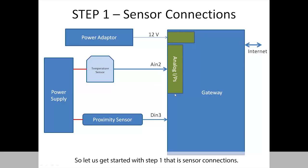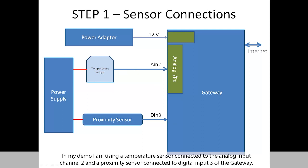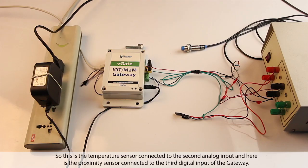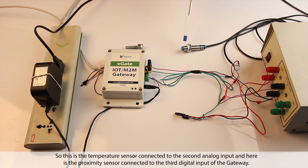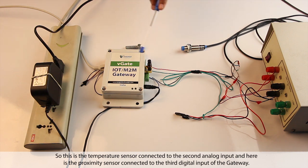Let us get started with step one, that is sensor connections. In my demo I am using a temperature sensor connected to the analog input channel 2, and a proximity sensor connected to the digital input channel 3 of the gateway. This is the temperature sensor connected to the second analog input, and here is the proximity sensor connected to the third digital input of the gateway.